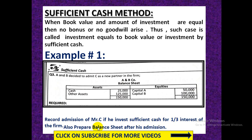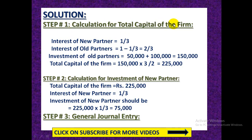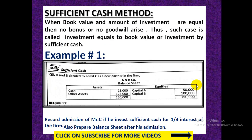We will see how much amount C should bring for a one-third share. We will also prepare the balance sheet because he is bringing cash. Step 1: Calculation for total capital of the firm. In equal to book value or sufficient cash cases, we always calculate total capital this way. C is coming for a one-third share, so old partners A and B have a two-thirds share. Their investment is 50,000 and 1 lakh as given in the balance sheet, totalling 1,50,000.